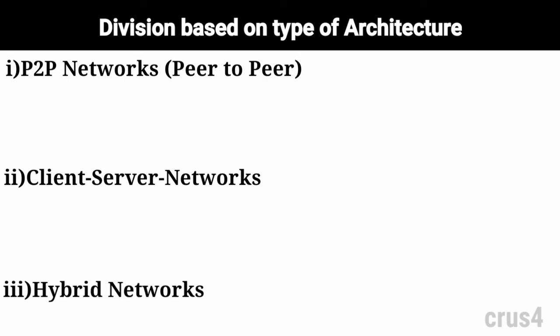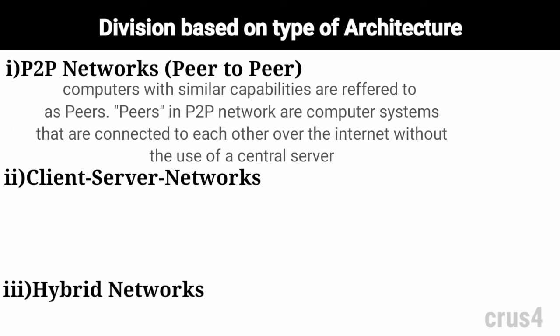P2P networks — peer-to-peer networks: computers with similar capabilities and configurations are referred to as peers. The peers in a P2P network are computer systems connected to each other over the internet. Without the use of a central server, files can be shared directly between systems on the network.